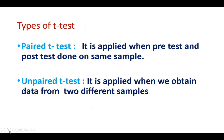The data must be quantitative in nature. There are two types of t-tests. One is the paired t-test, which is applied when a pre-test and post-test are done on a single group. The other is the unpaired t-test, applied when you have two different samples — an experimental group and a control group.